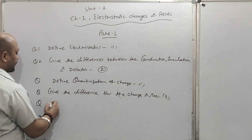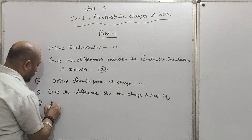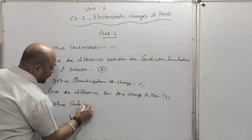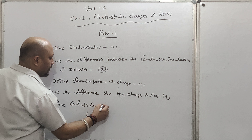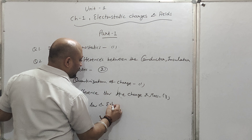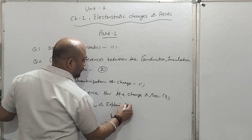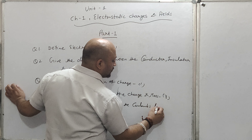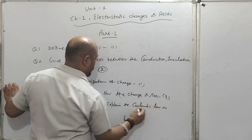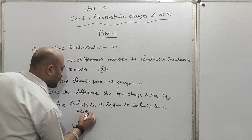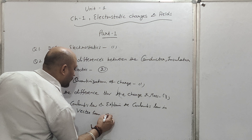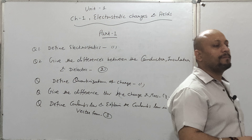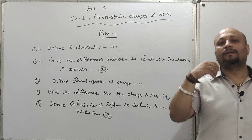अब एक बड़ा ही important question जो paper में 101% पूछा जा सकता है: Define Coulomb's Law, and explain Coulomb's Law in vector form। यह three marks का question है और 101% paper में आ सकता है। सबसे पहले आपने इसकी definition देनी है।